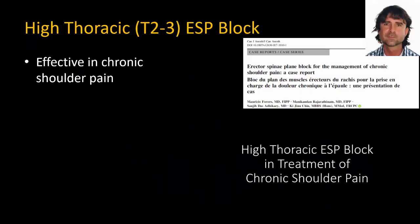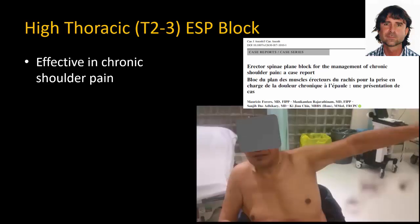The rather surprising finding that the ESP block could be used for painful conditions of the upper limb was due to the innovation of Mauricio Ferraro, the inventor of the ESP block. He first performed a block at the T2 level to treat chronic degenerative shoulder pain, and the effect was remarkable, as you will see here.